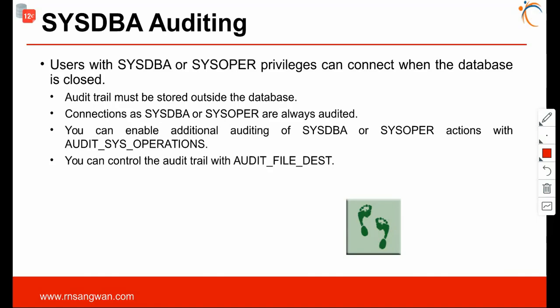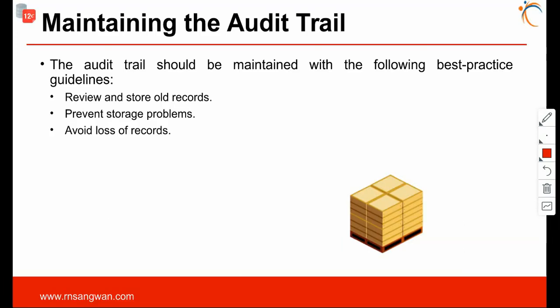For SYS DBA auditing: users with SYSDBA or SYSOPER privileges can connect even when the database is closed, because SYSDBA is the one who opens the database with ALTER DATABASE OPEN. Therefore the audit trail must be stored outside the database. Connections to SYSDBA or SYSOPER are always audited. You can enable additional auditing of SYSDBA or SYSOPER actions with AUDIT_SYS_OPERATIONS. You can control the audit trail location with the AUDIT_FILE_DEST parameter — maintaining this audit trail location is important.